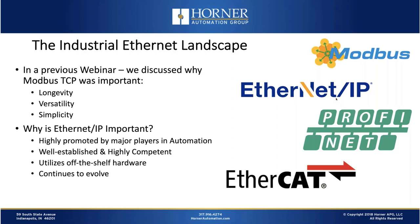In my previous webinar discussing Modbus TCP, we discussed why it was important: longevity, versatility, simplicity. It's important then to discuss what makes Ethernet IP important. It's highly promoted by major players in automation, it has market-leading share alongside Profinet, and it's a well-established, highly competent industrial Ethernet solution that works very well. One of the most important factors is that it utilizes off-the-shelf hardware almost fully — there's no special Ethernet IP hardware you need to buy, though you might buy hardened Ethernet components. It has also continued to evolve, adding safety and motion capabilities.